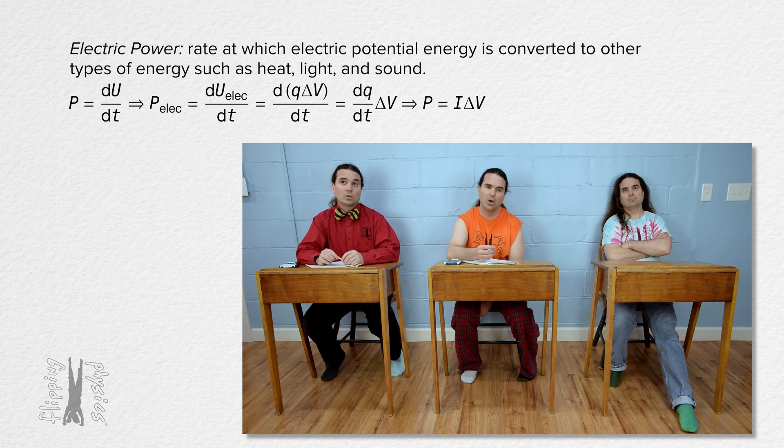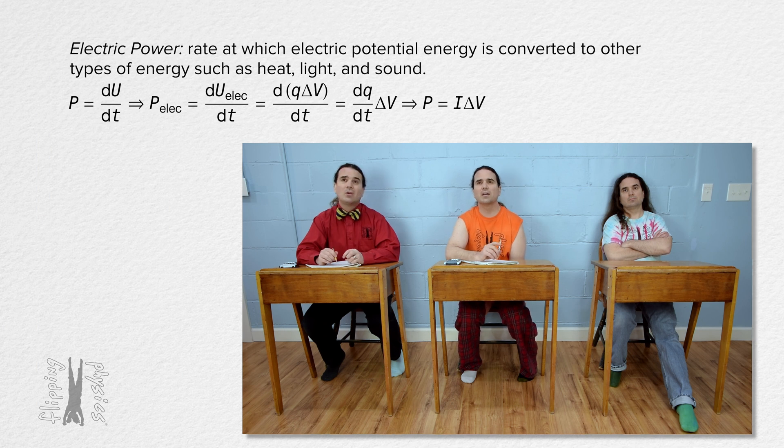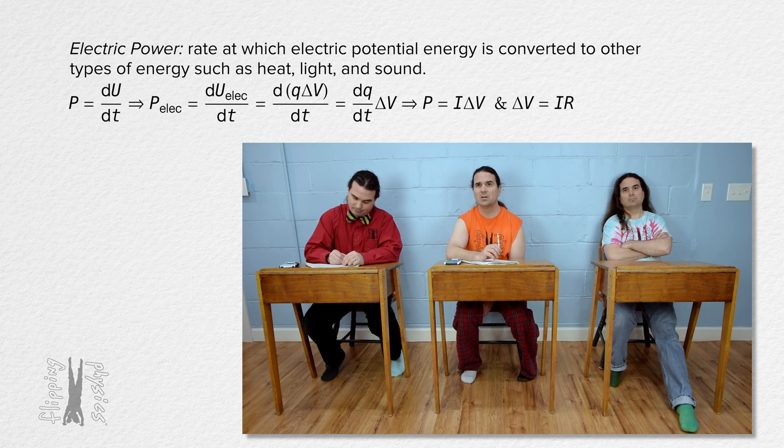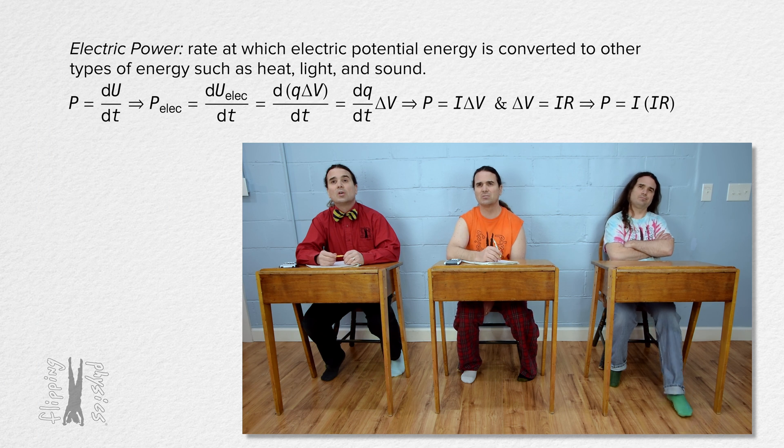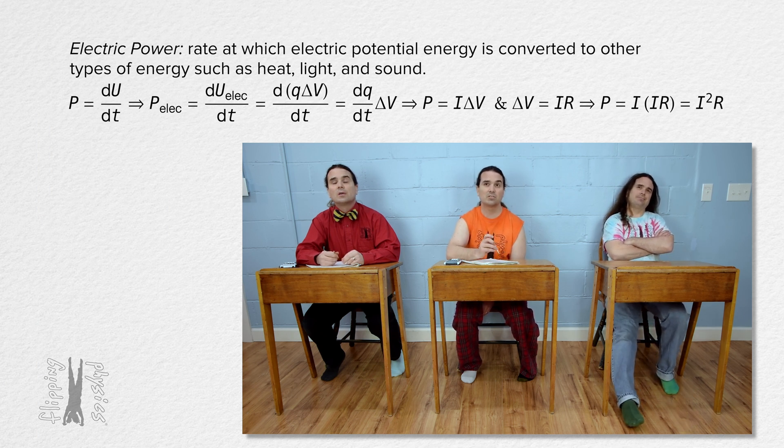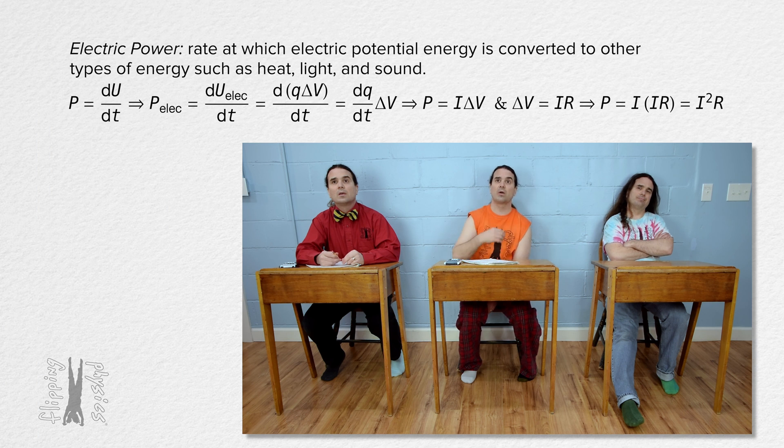Bobby, please use the more common version of Ohm's law to derive another expression for electric power. Okay. Ohm's law says electric potential difference equals current times resistance. We can substitute that into the expression for electric power Billy derived. And we get that electric power also equals the square of the electric current through a resistor times the resistance of the resistor. Thank you Bobby.